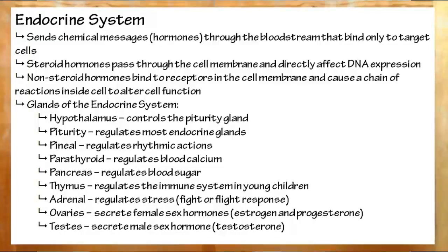To recap, the endocrine system functions through chemical messages known as hormones. These will bind only to target cells. There are two types of hormones. Steroid hormones, which will enter the cell and bind to DNA, directly affecting its expression. And non-steroid hormones, which will indirectly cause changes in the cell by binding to receptors in the membrane.